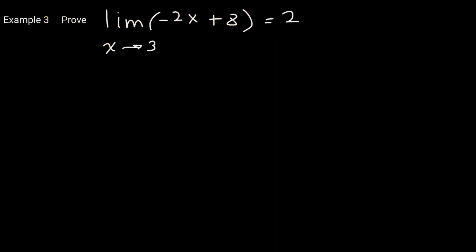Here is the example: we'll prove that the limit of this function, as x values approach 3, is equal to 2. Remember, your first step is to find delta — whatever epsilon they give us, we have to find a corresponding delta. I invite you to pause this lesson and see if you can find delta.